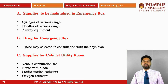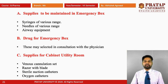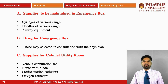Second is the drugs for the emergency box. These may be selected in consultation with the physician and may include Pentazocine, Pantop, Paracetamol injections, etc. Third is the supply for the cabinet or utility room, which contains venous infusion sets, razor with blade, sterile suction catheter, and oxygen catheter.